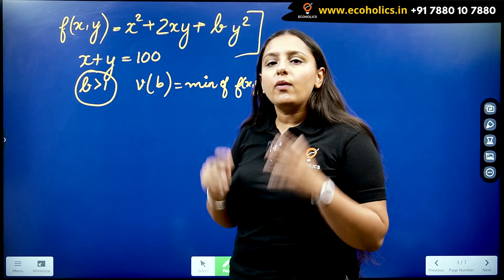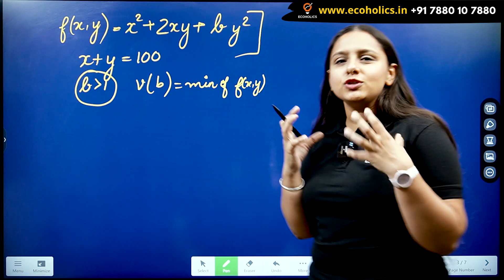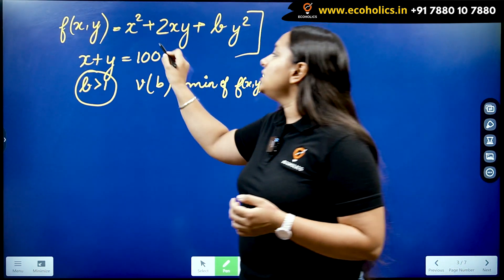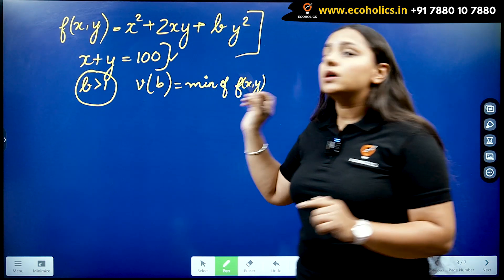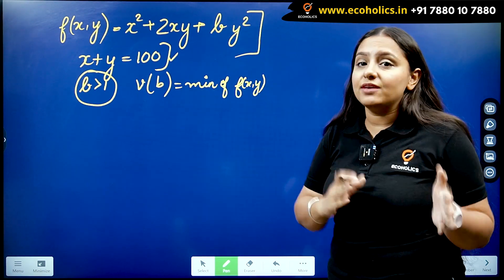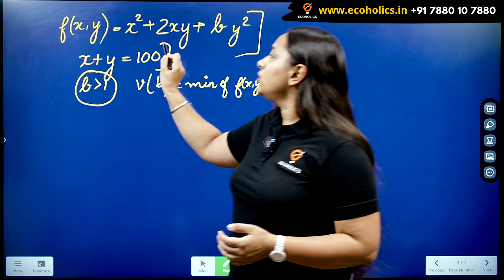We have to minimize this function subject to this constraint, where b will always be greater than 1. v(b) is going to be the minimum value attained by this function. Now as I told you previously, you don't have to solve this question fully, so we are going to just do manipulation.